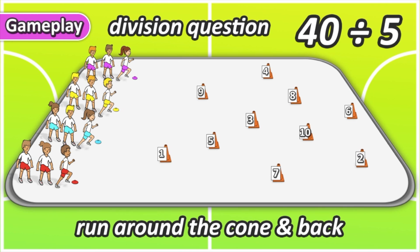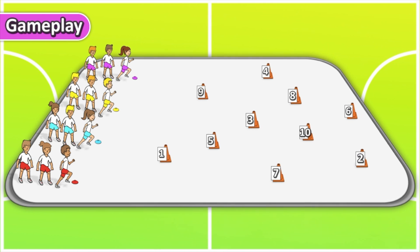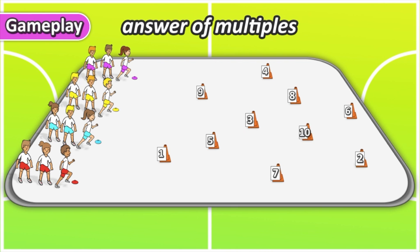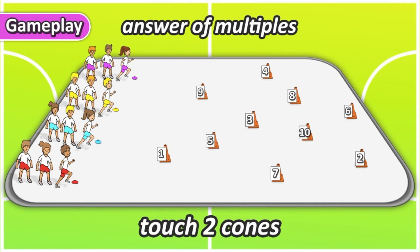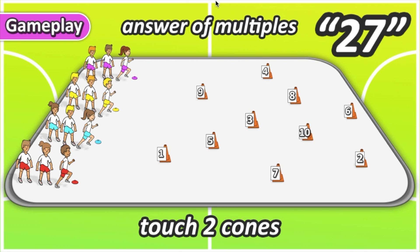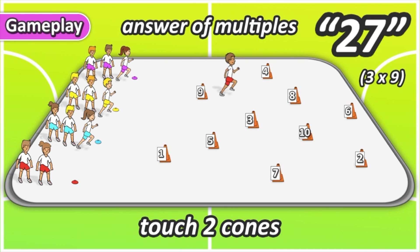After you've done lots of different goes with division questions, your teacher might switch it up. This time your teacher gives you a larger number and you have to work out the multiples that multiply together to make that number. You're going to be touching two different cones — two different numbers that multiply together to make that larger number. For example, if your teacher calls out 27, you have to work out what multiplied by what equals 27. The answer would be 9 and 3, because 3 multiplied by 9 is 27. So the player works it out, goes and touches 9, then touches 3, and comes back.